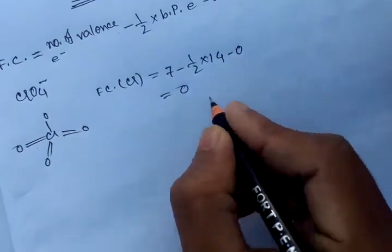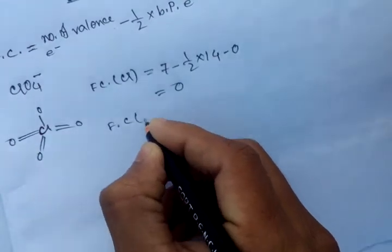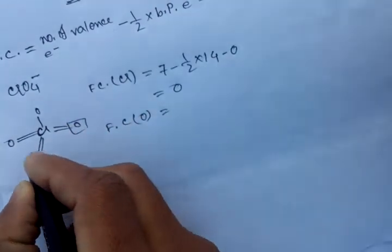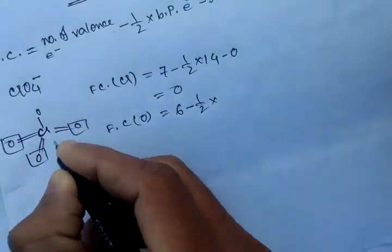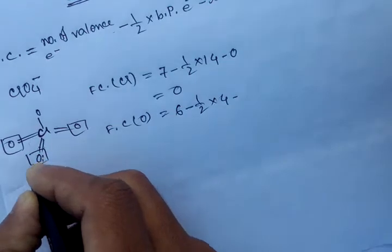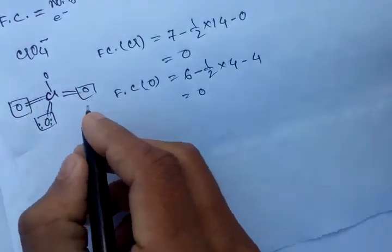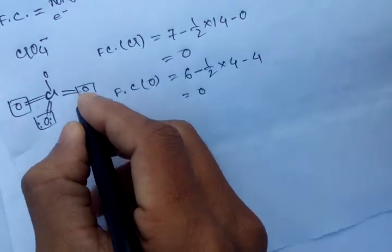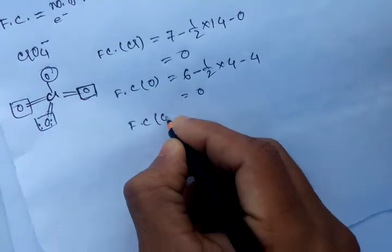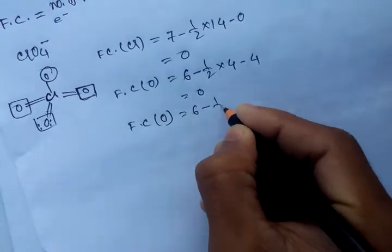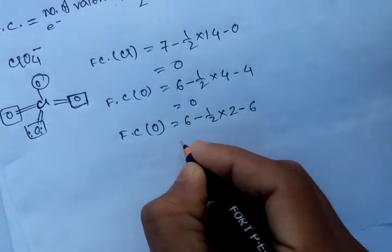Now the formal charge of this type of oxygen atom: valence electrons six, minus half times bonded electrons four, minus lone pair electrons four, equals zero. So these three oxygen atoms have no formal charge. For the other oxygen, valence electrons again six, minus half times two, minus lone pair six equals minus one.